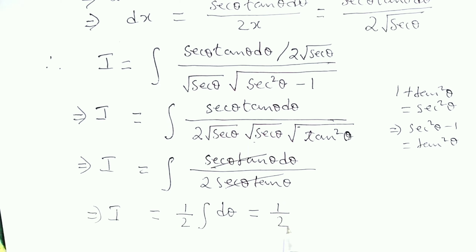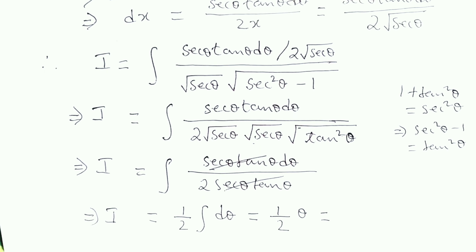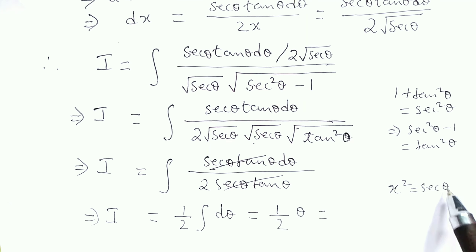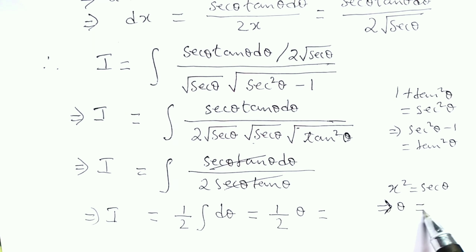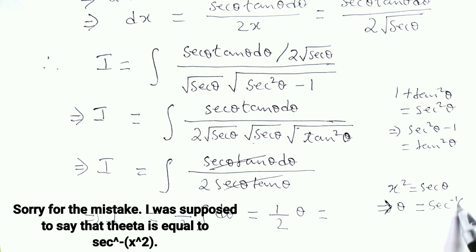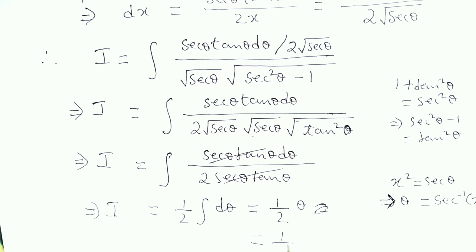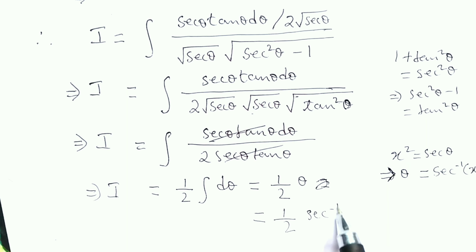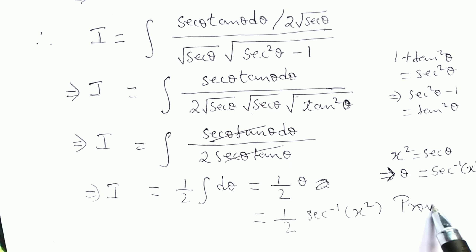Integration of dθ is θ. Lastly, we have to express θ in terms of x. From the beginning, we let x² equal sec θ. This implies θ equals sec⁻¹(x²). So in place of θ, we have sec⁻¹(x²), giving us I equal to one-half sec⁻¹(x²). Hence, proved.